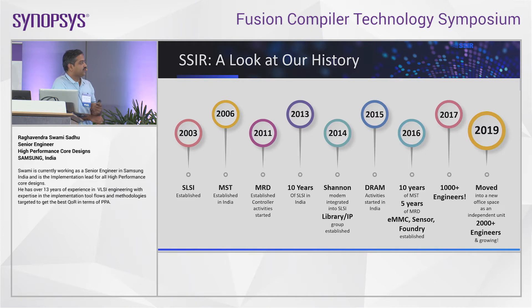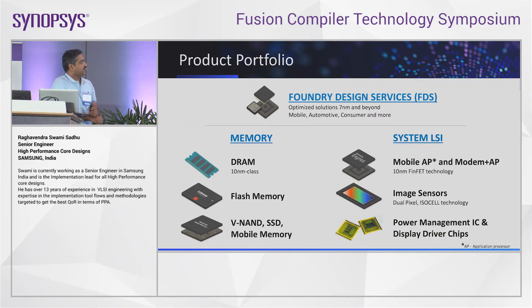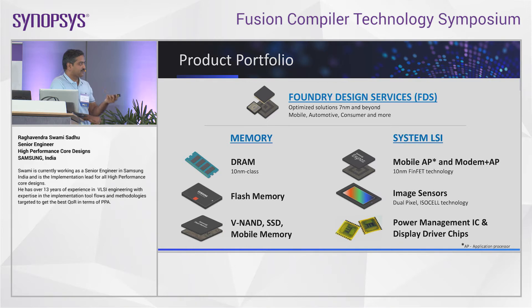By 2017, we hit close to 1,000 employees, and by 2019 we started growing much faster and could hit 2,000 employees — and we are still growing. In SSIR, we broadly classify our BUs into three: the memory division, system LSI, and foundry design services. Memory division deals with all types of memories; system LSI deals with all types of SOCs going into Samsung products; and we, in foundry design services, act as a bridge between Samsung Foundry and customers across mobile, automotive, consumer, and more.